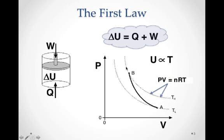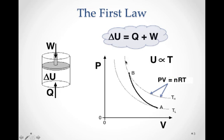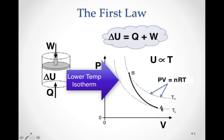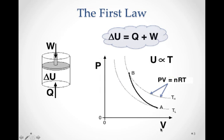This curve is called an isotherm, where the temperature remains the same. If we look at another isotherm at a lower temperature, it sits lower on the graph. That dashed line is still a statement of the inverse relationship between pressure and volume, but at a different temperature. Those dashed lines represent Boyle's law.